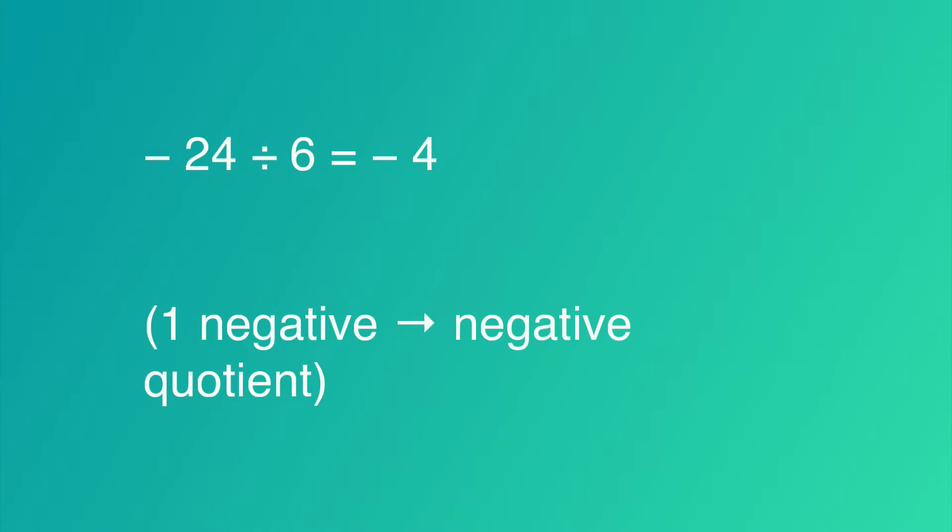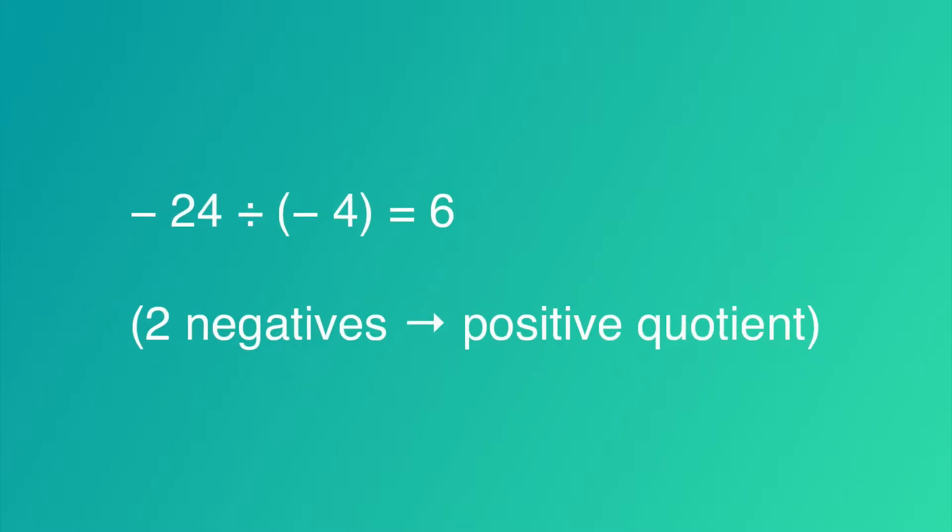For another, negative 24 divided by 6 equals negative 4. There's one negative, making this a negative quotient. Negative 24 divided by negative 4 equals 6. So here we have two negatives, which equals a positive quotient.